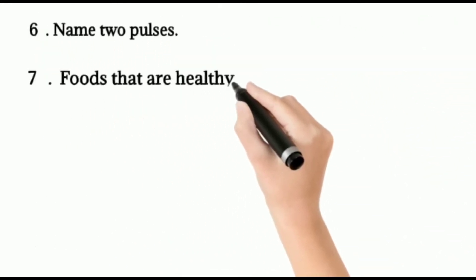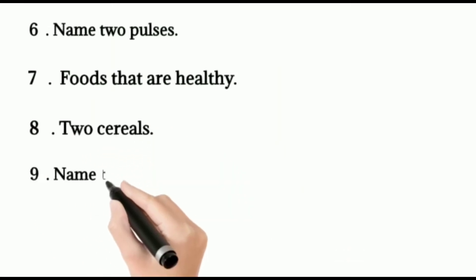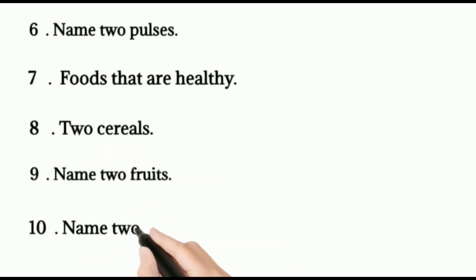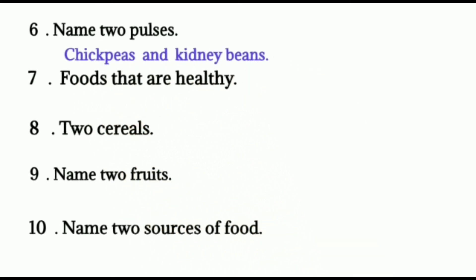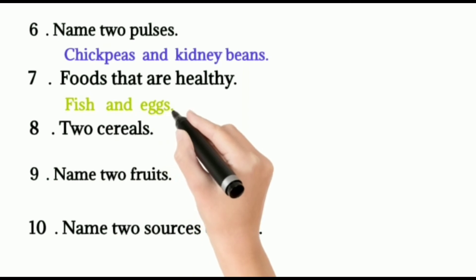Six, name two pulses. Chickpeas and kidney beans. Other pulses are green gram, black gram, peas, etc. Seven, food that are healthy. That is milk, meat, fish, fruits, vegetables, etc.